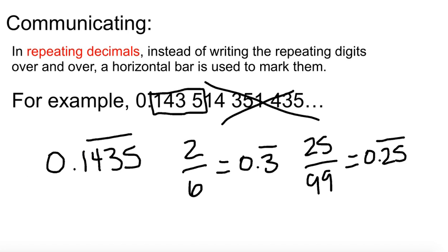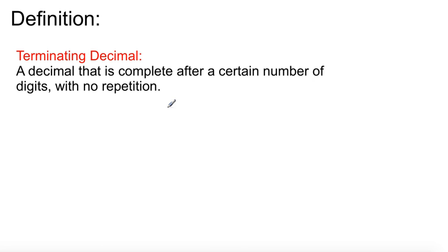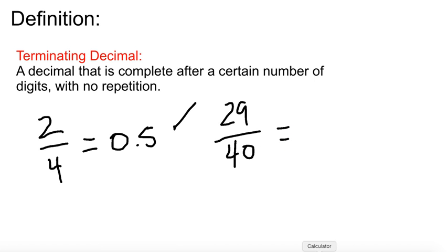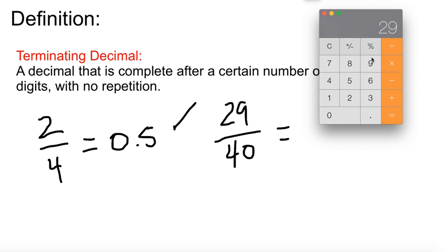And finally, the terminating decimal. Write this definition down. 2 over 4, which we said is 0.5 — no horizontal bar, nothing. This is it; it's done. Terminating decimal. Let's look at something like 29 over 40, directly from your textbook. 29 divided by 40 gives us 0.725, and that's it — nothing else. It terminates; it finishes.